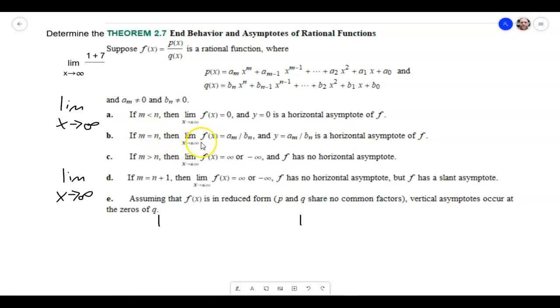Then the limit as x approaches either positive or negative infinity is just going to be the coefficient of the x with the highest exponent on the top over the coefficient of the x term with the highest exponent on the bottom. And that's also going to be your horizontal asymptote.